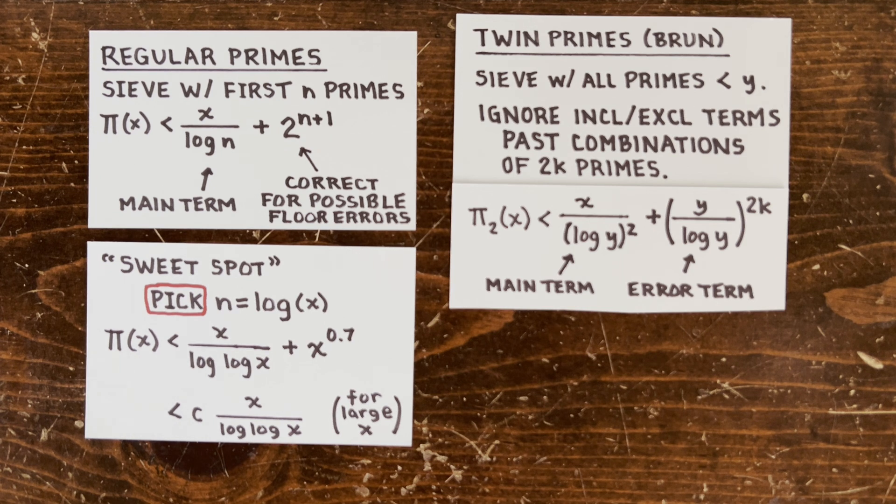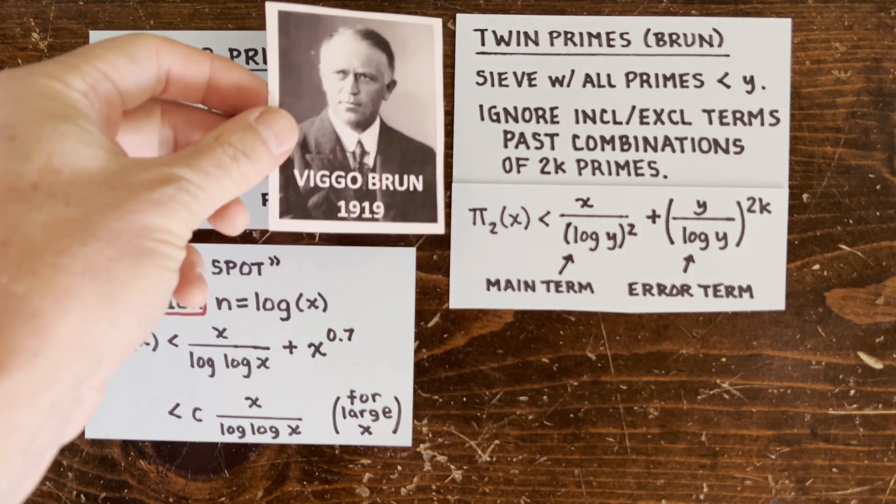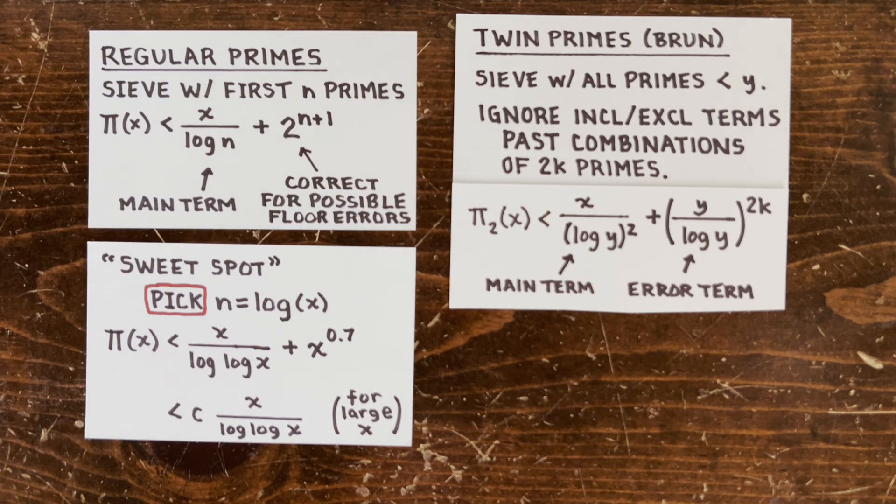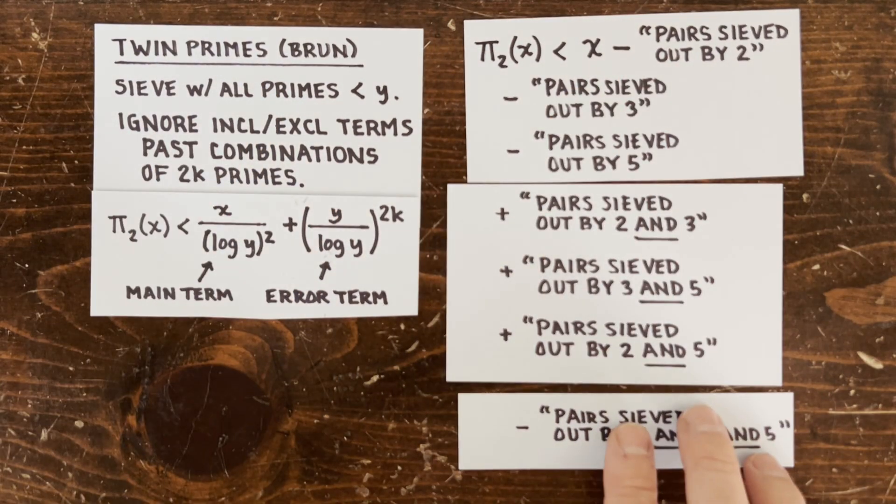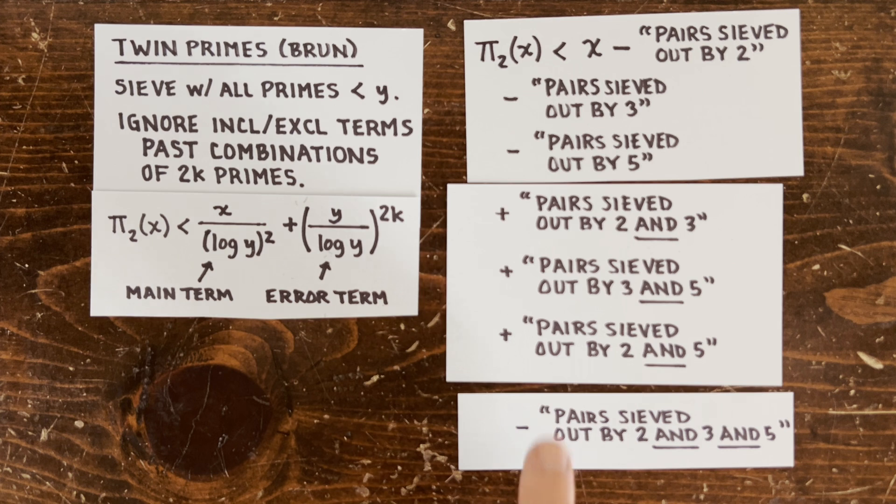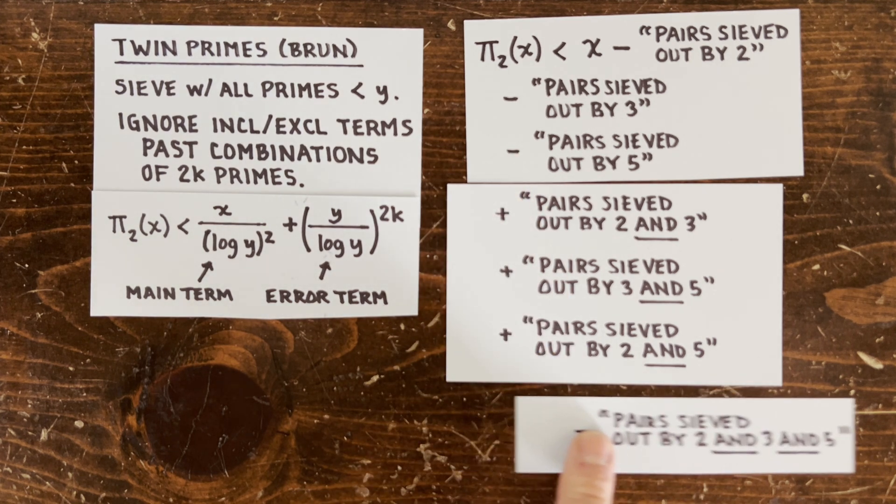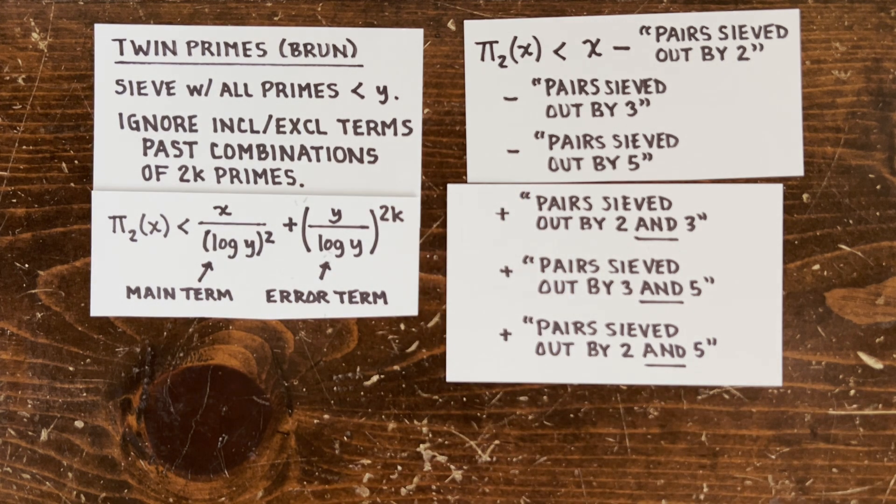Now, Viggo Brun's got a more severe situation because his error term is way worse. So he decides to sieve with all primes less than y, where again, y is a function of x. But critically, he decides to ignore all the inclusion-exclusion terms past combinations of 2k primes, where k is some function of y.